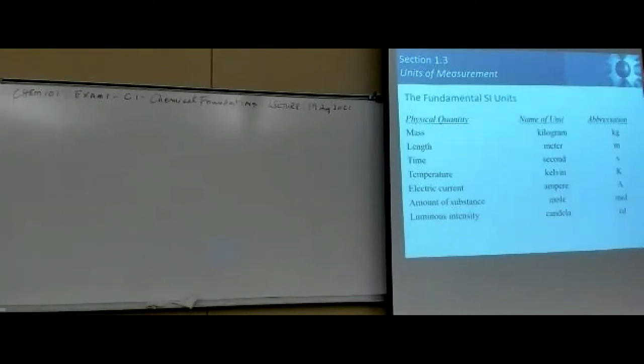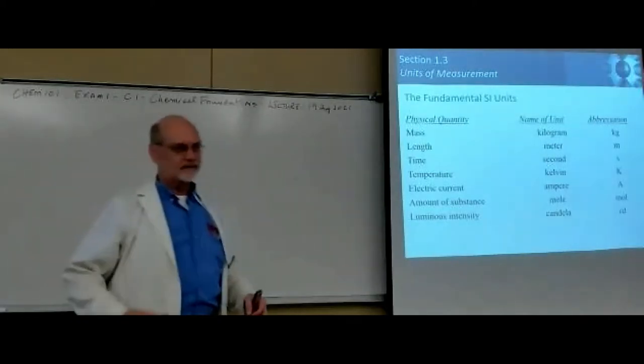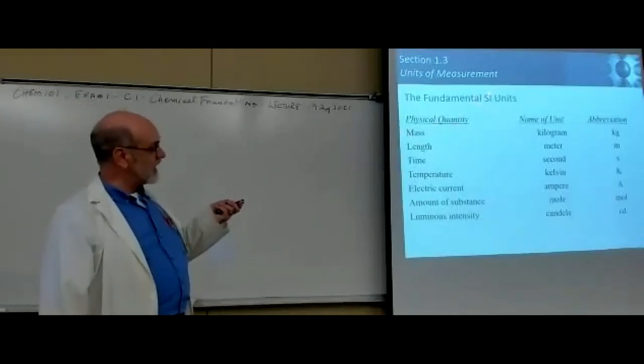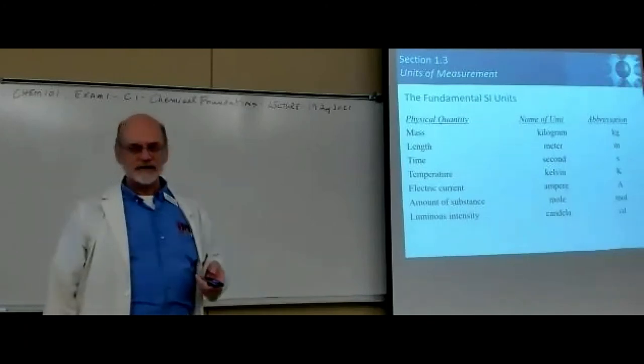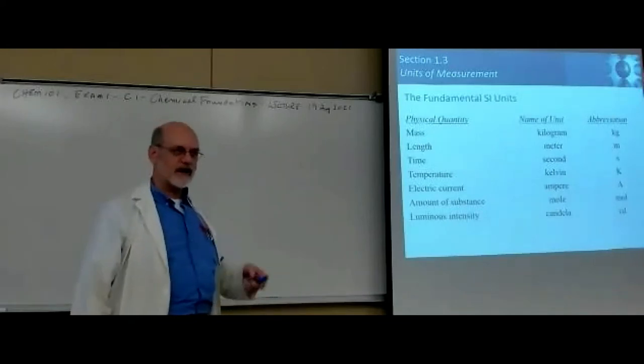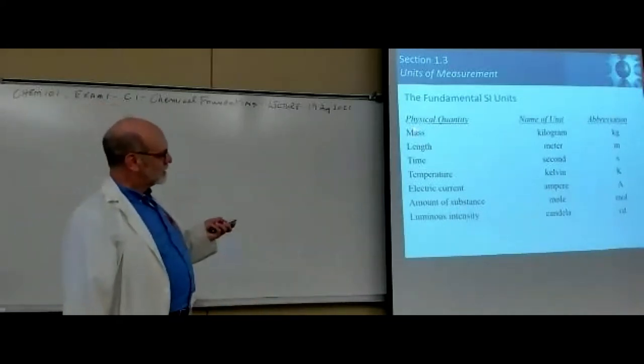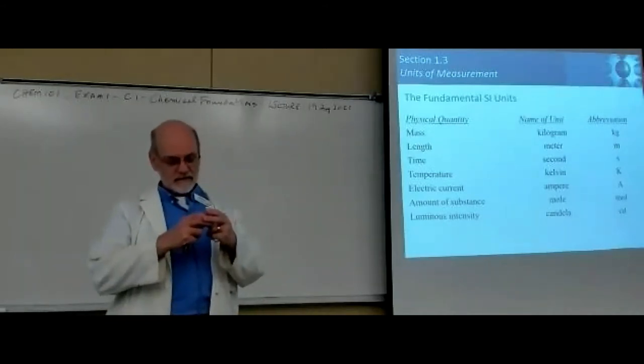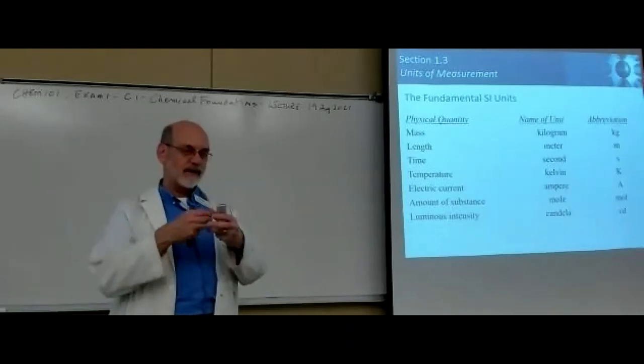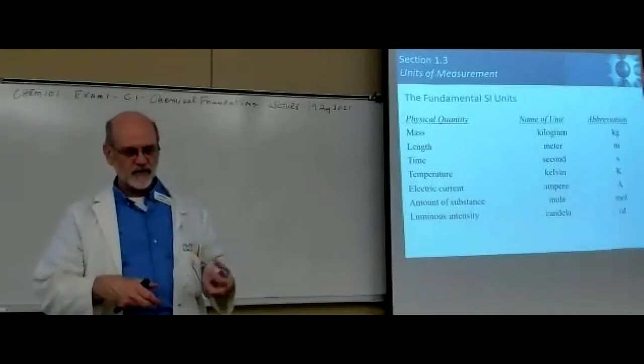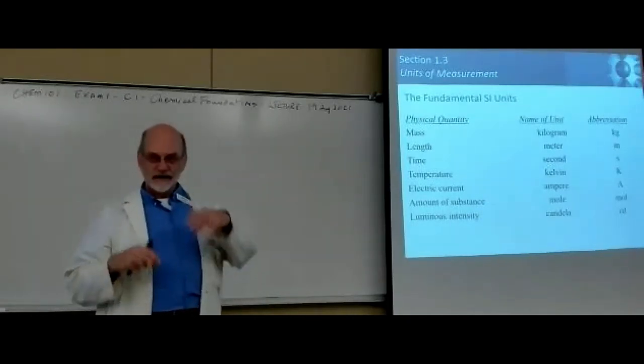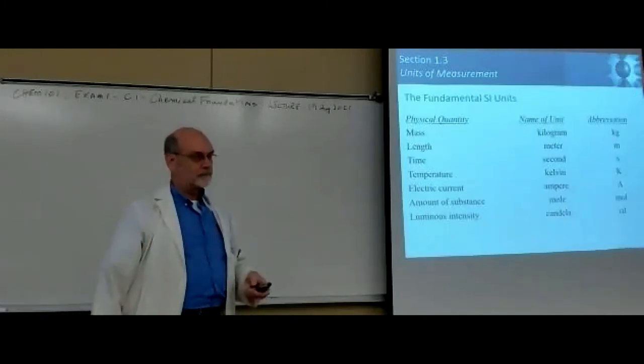If scientists are going to communicate with one another about their results, we've got to have agreed upon things. One of those things is the units that go with the numbers. The fundamental unit of mass is the kilogram. Why do we say it's fundamental? That's because somewhere there is a standard mass. It's actually a platinum iridium cylinder that they keep in a double bell jar with inert gases in it.